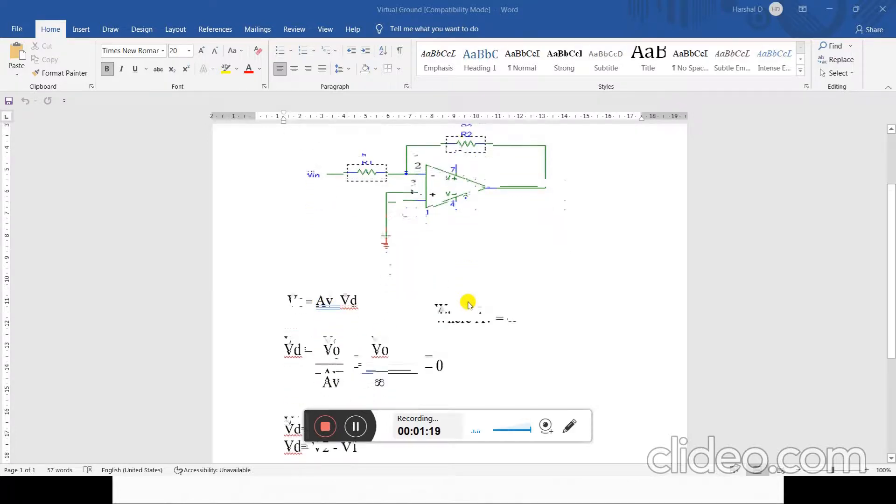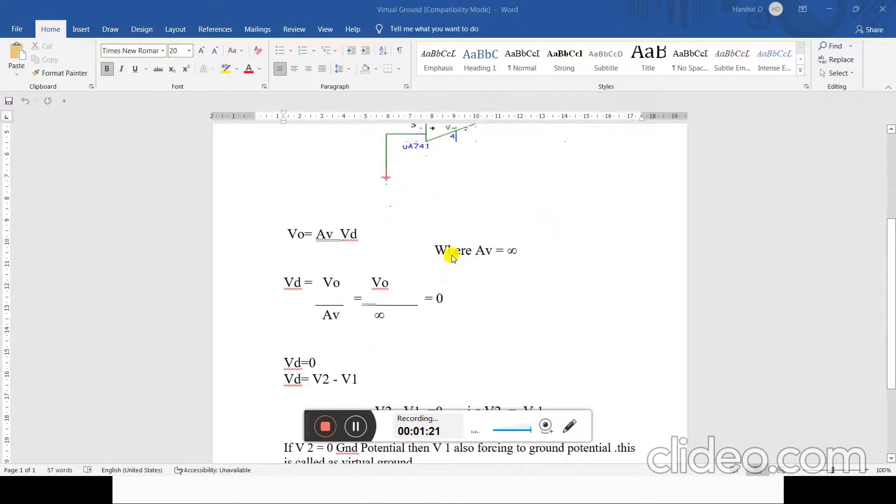We know that in the operational amplifier, the gain is infinite. If the gain is infinite, then the output voltage divided by the gain, that means Vout divided by infinity, equals zero.